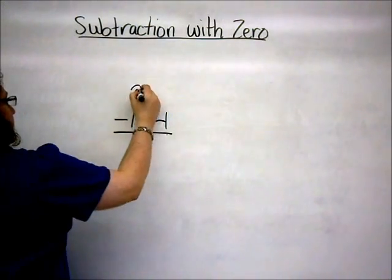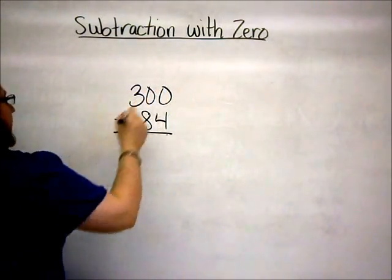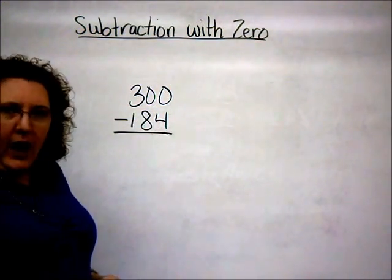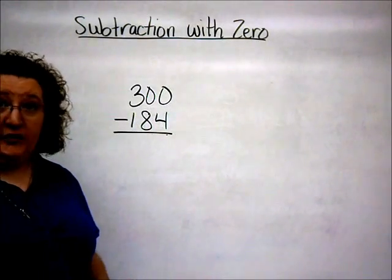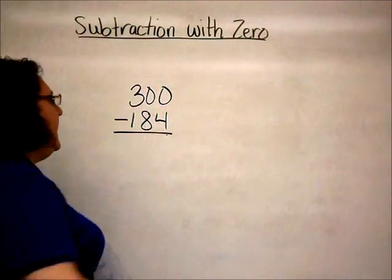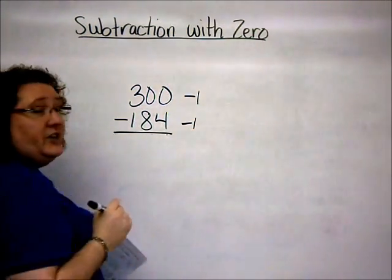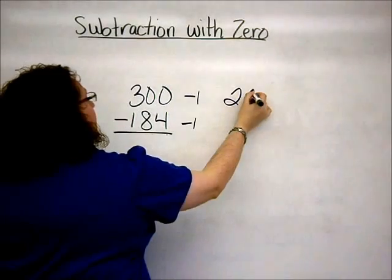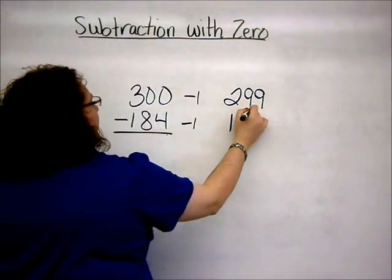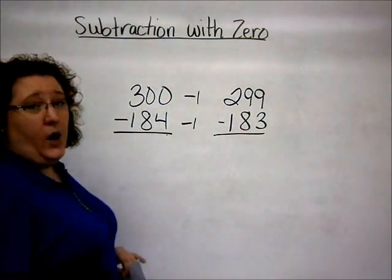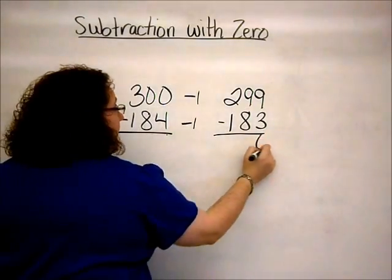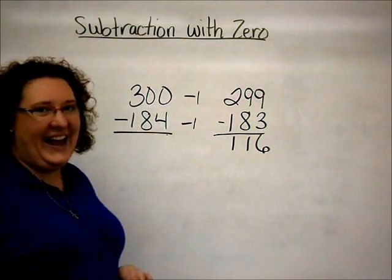So again, we're going to use the same problem with the three hundred on the top. Now, if we were to add one to the top and the bottom, we still end up with a problem where we're going to have to borrow to solve it. So instead of adding, we're actually going to do the opposite. We're going to subtract, we're going to subtract one from both numbers. This becomes two hundred ninety-nine and then the bottom number will give one hundred eighty-three. Notice that now when I subtract, there is absolutely no borrowing necessary and we still end up with our one hundred sixteen answer.